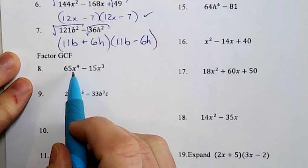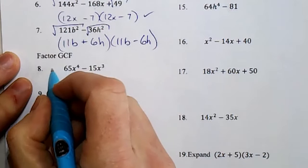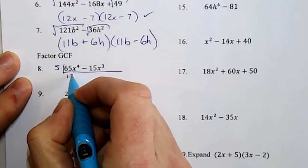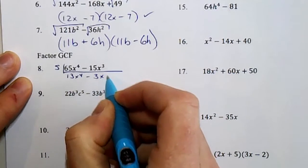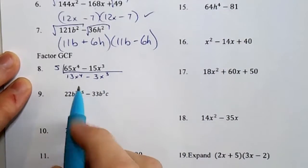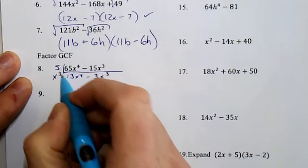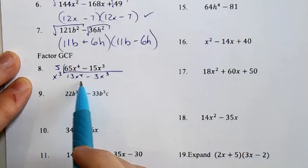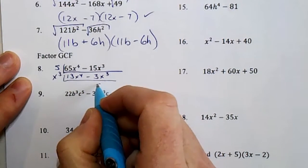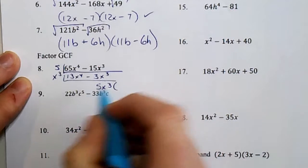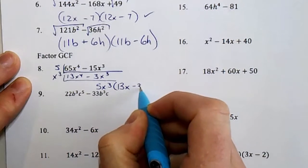Okay, so right away, GCF. I've got x's in both. I've got 5 goes into both. Nothing goes into 3 and 13, but I can take out x cubed. I have 4 here, 3 here. I can only take out 3 from both. So my GCF, my final answer, the leftover 13x minus 3.